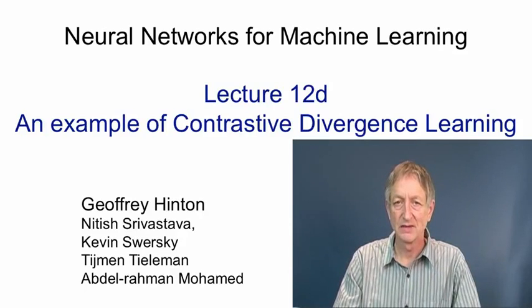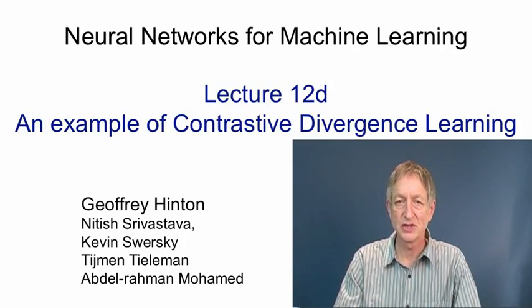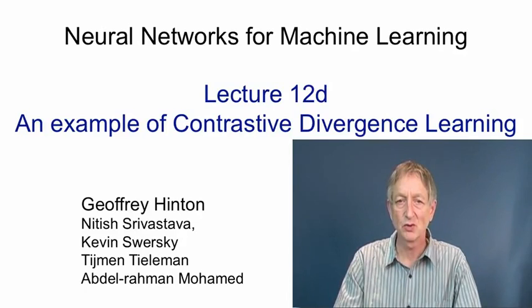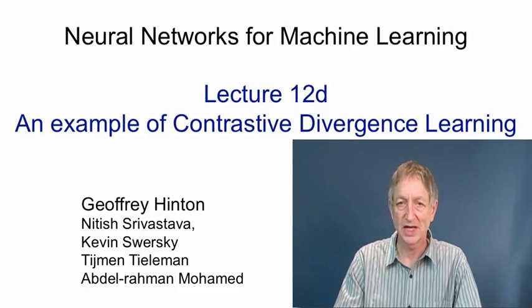In this video, I'm going to show a simple example of a restricted Boltzmann machine learning a model of images of handwritten twos. After it's learned the model, we'll look at how good it is at reconstructing twos, and we'll look at what happens if we give it a different kind of digit and ask it to reconstruct that. We'll also look at the weights we get if we train a restricted Boltzmann machine that's considerably larger on all of the digit classes.